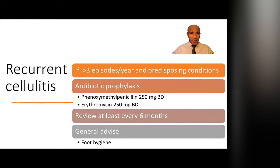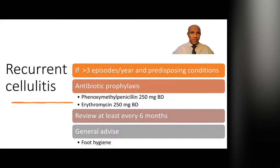For recurrent cellulitis — if a patient develops more than three episodes a year, especially with a predisposing condition like diabetes or chronic lymphedema — they will need antibiotic prophylaxis. Generally this is oral penicillin twice a day, or erythromycin twice a day. The need to continue antibiotics should be reviewed every six to twelve months. For recurrent cellulitis patients, I give the same advice as to my diabetic patients about foot hygiene: keep feet clean, wash daily in the evening with lukewarm water, paying particular attention to the spaces between the toes, and pat dry including those web spaces to prevent fungal infection.